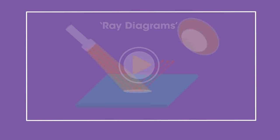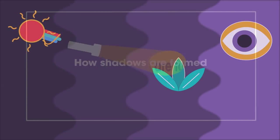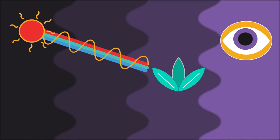In this video we're going to learn about how shadows are formed. It's important to remember that light travels in straight lines.